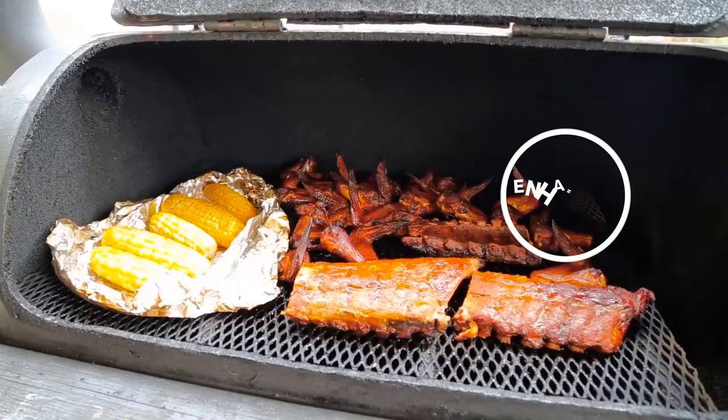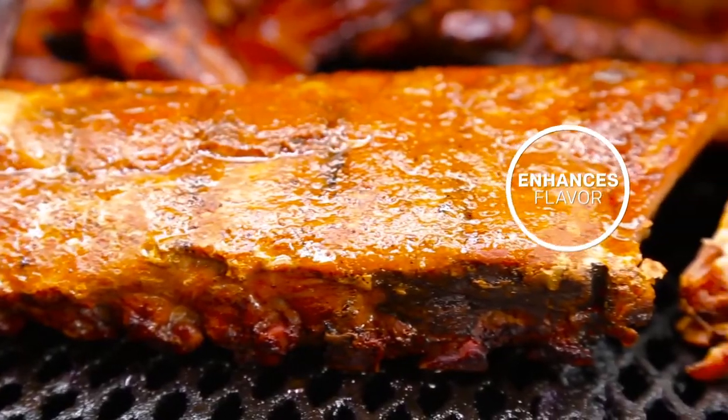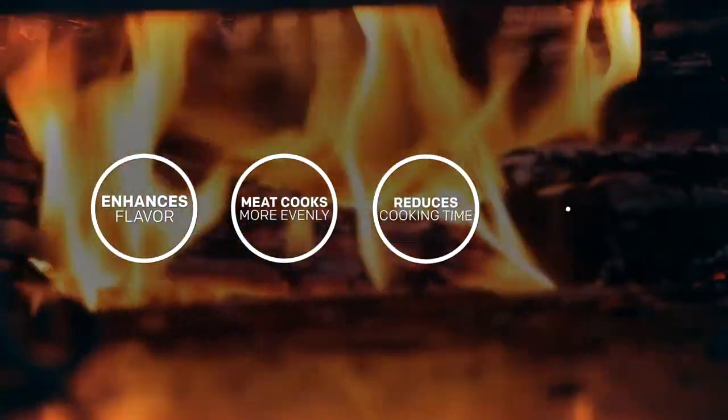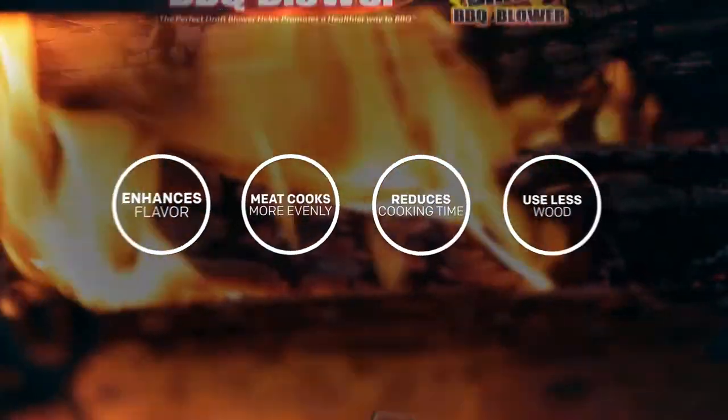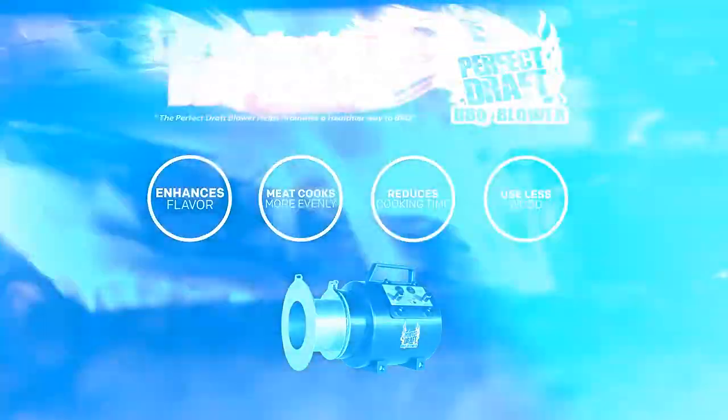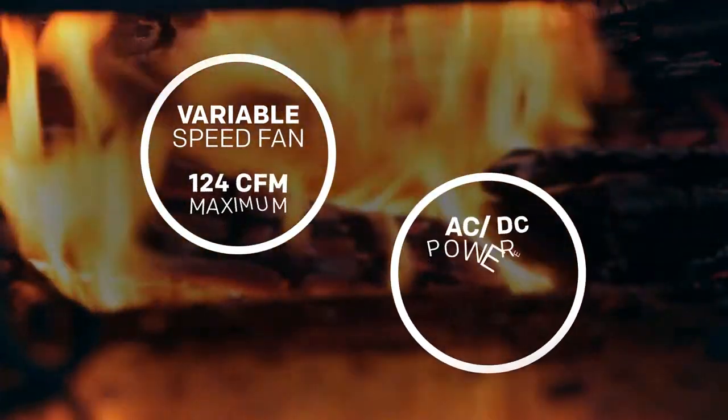It enhances the flavor of the meat you're cooking, cooks your meat more evenly, reduces your cooking time, and you use less wood when using the Perfect Draft blower. It has a variable speed fan and is AC and DC powered.